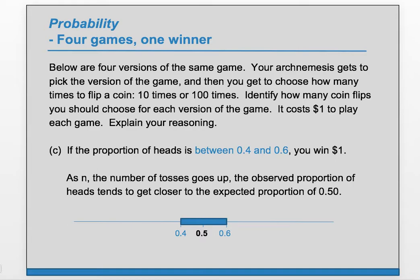Part C: if the proportion of heads is between .4 and .6, you win. Do we want to be close to the expected value or far from the expected value? We want to be close to the expected value to win. So do we want small n or large n? We want large n, because as n goes up we expect to be closer to the expected proportion. So in this case, we want large n — we want 100 times.